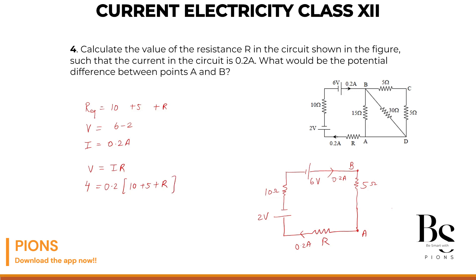So taking 0.2 on the other side, it will be 4 upon 0.2 equals to 15 plus R. Removing this point, you will get 40. 40 upon 2. That is 20. 20 minus 15. That is equals to R. So 5 Ohms. That's our resistance in this particular circuit. Correct. So if resistance is 5 Ohm.